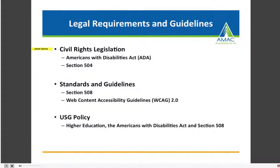There are legal requirements and guidelines for accessibility beginning with civil rights legislation. We have the Americans with Disabilities Act, or the ADA, which covers places of public accommodation, and recent court rulings include the Internet as a place of public accommodation. We also have Section 504 of the Rehabilitation Act as amended, which requires accessibility of programs, services, and activities at colleges and universities.